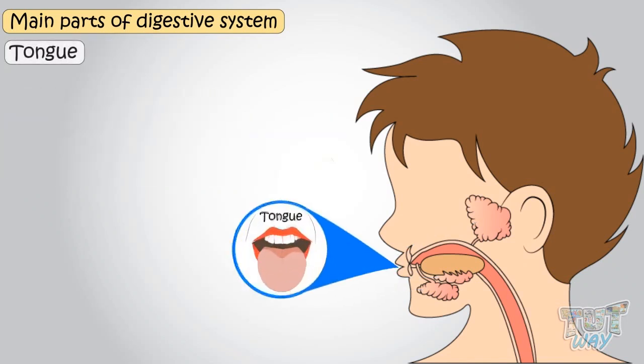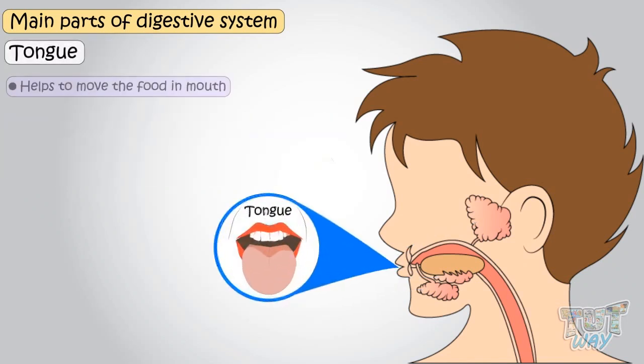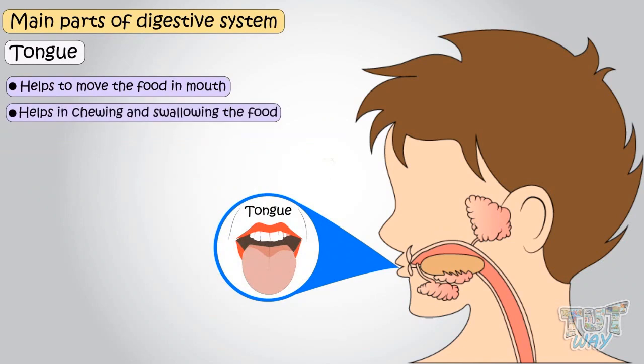Tongue — the tongue helps to move the food in the mouth and helps in chewing and swallowing of food.